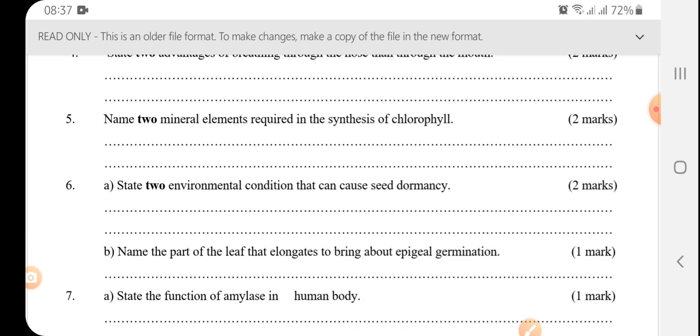Name two mineral elements required in the synthesis of chlorophyll. So all I want you to remember is that we don't write using symbols. So the elements include magnesium, nitrogen, and iron.